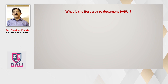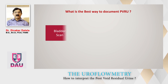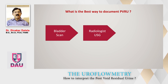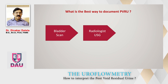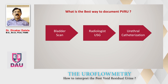Another controversy is what is the best way to document PVRU. Practically, a bladder scan is used, but it has technical fallacies — it is operator-dependent and machine-dependent. We believe that if you ask a radiologist to assess post-void residual volume by ultrasound, this would be better, as operator-dependent fallacies will be much lesser. The best method is to insert a urethral catheter, drain the bladder completely, and know the exact amount. But this is invasive and therefore not practiced very often.